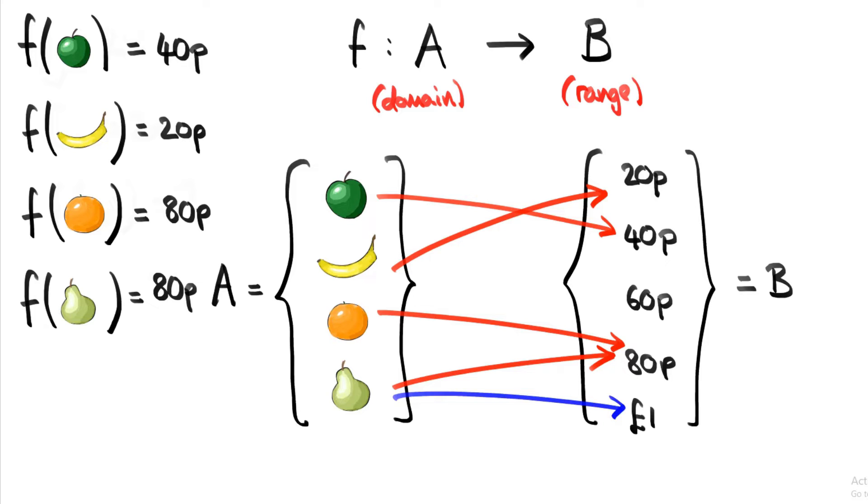If there were two arrows coming from pear, how would we know whether the output is going to be 80p or one pound? So each element in A is only going to have one arrow leaving from it. But again, it's okay for one element in B to have two arrows leading towards it.